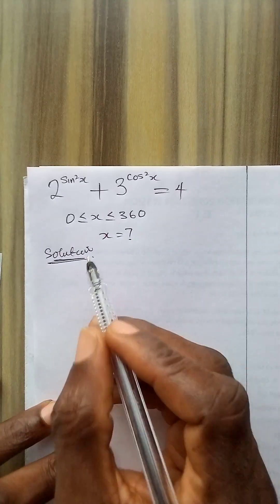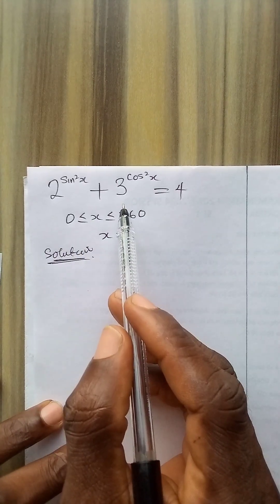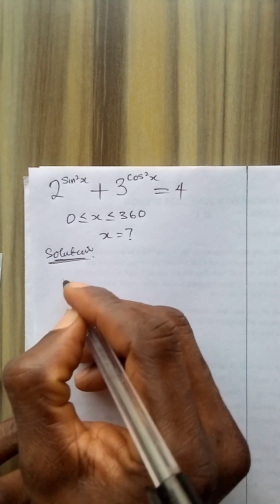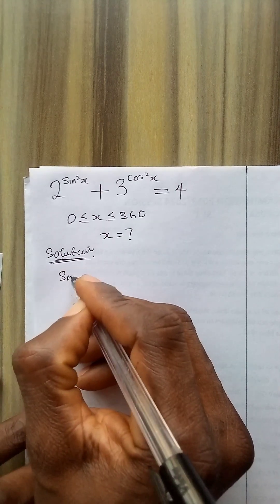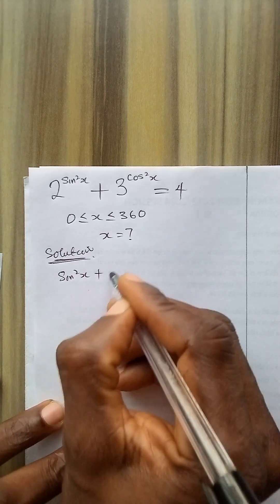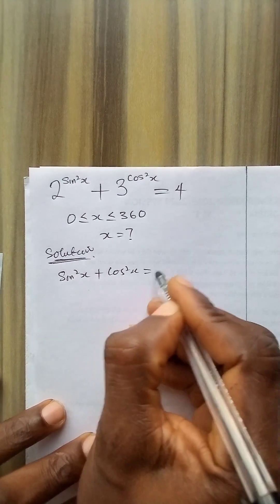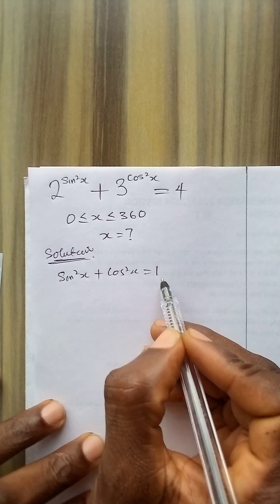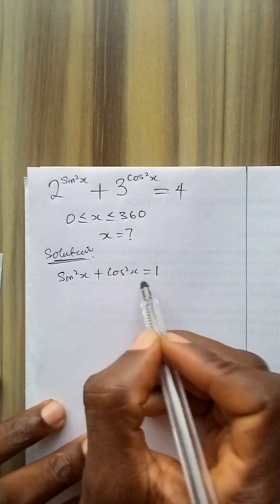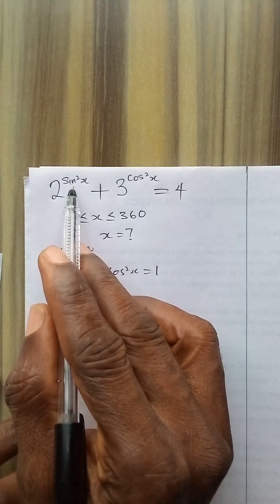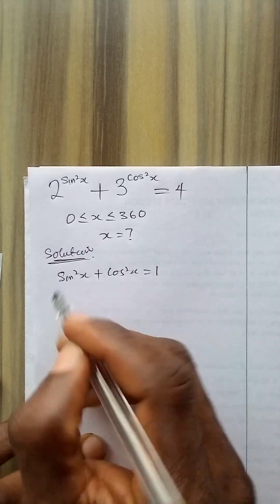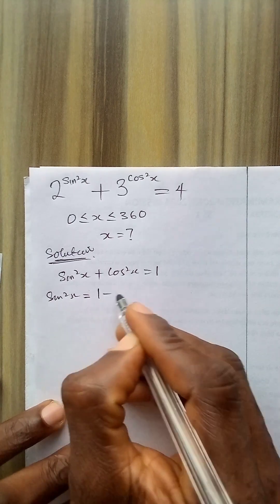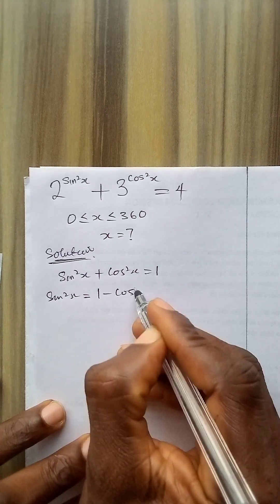To solve the problem we need to apply a trig identity. That identity is sine squared x plus cos squared x is equal to 1. I am going to make sine squared x the subject and then substitute it where I have sine squared x in the original question. So sine squared x is equal to 1 minus cos squared x.